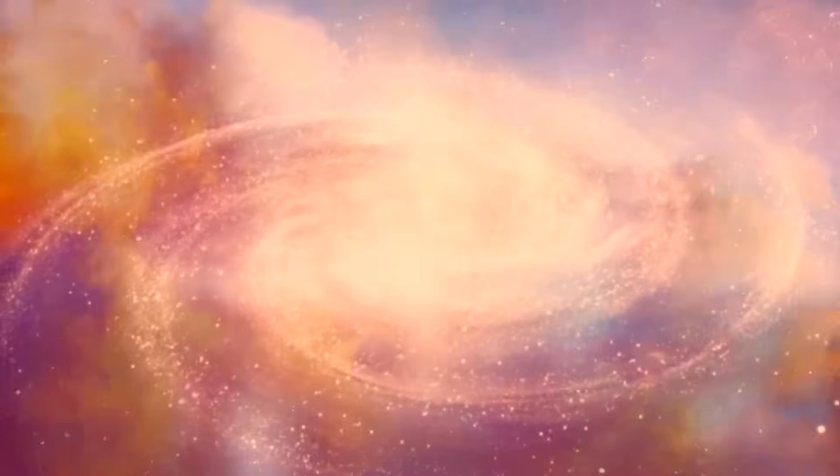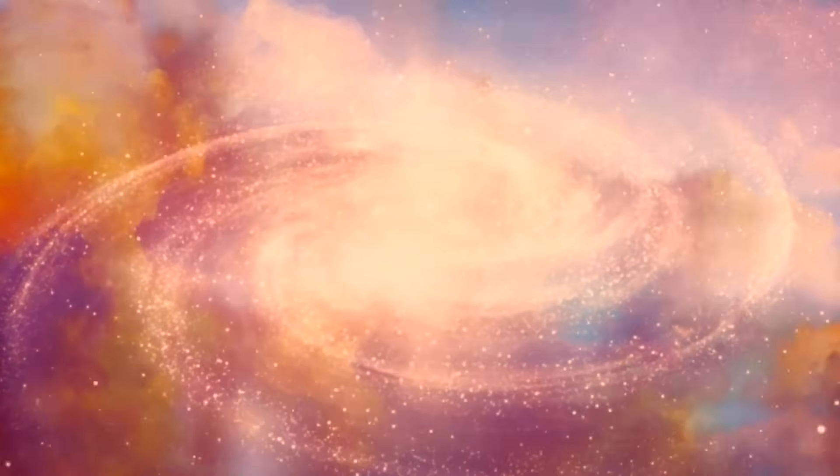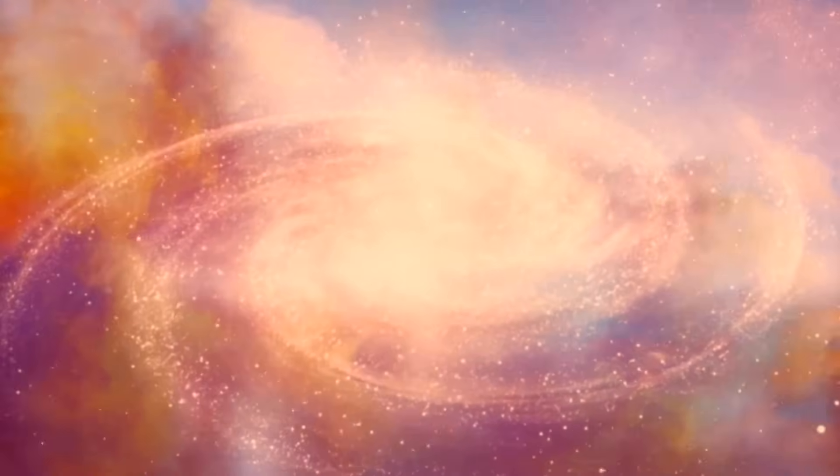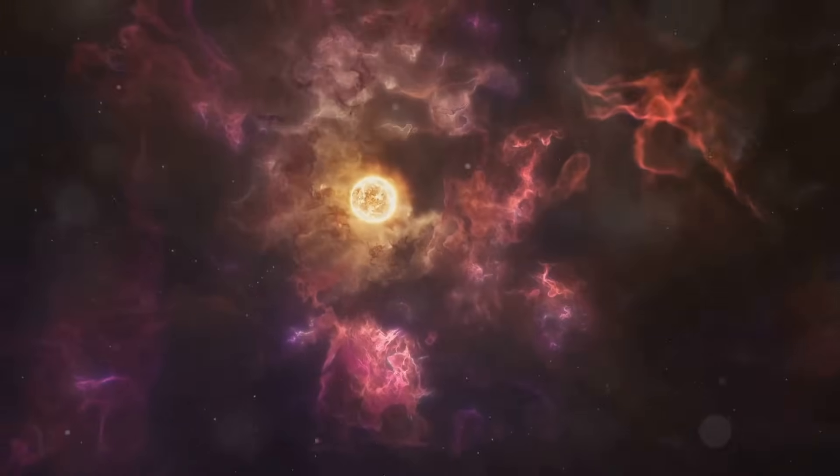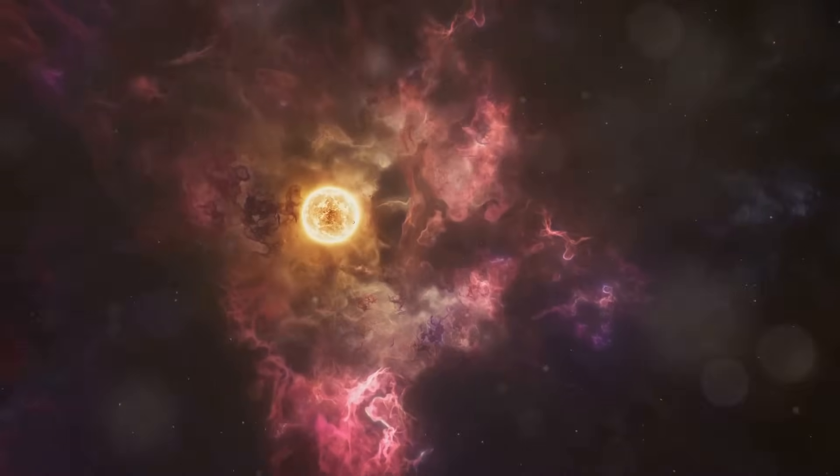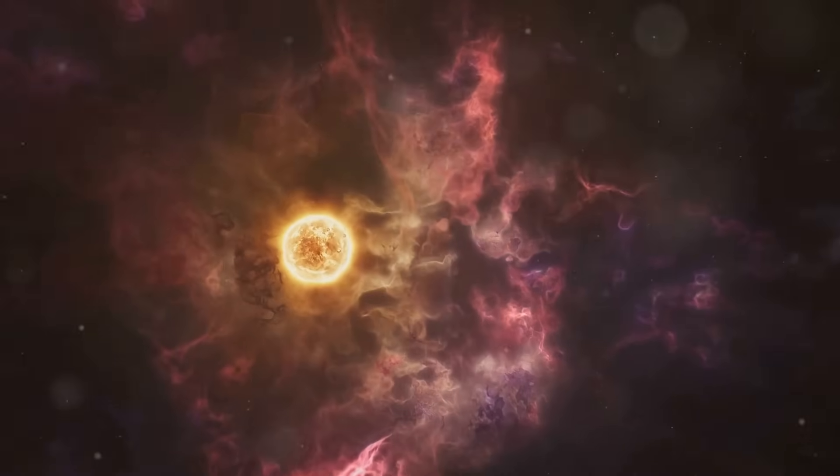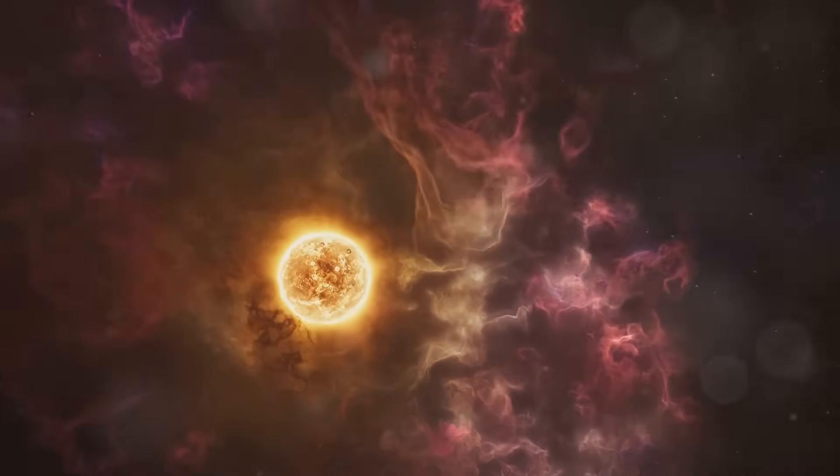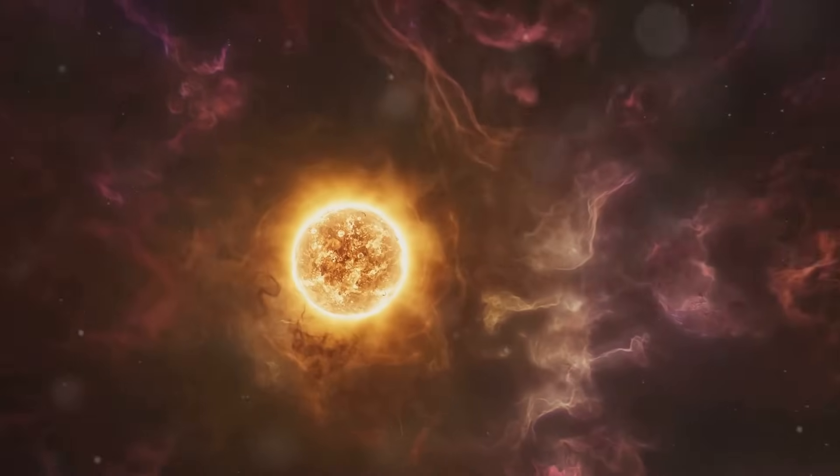Billions of years ago, our solar system was a swirling cloud of dust and gas. This vast, chaotic cloud, known as the Solar Nebula, was composed of hydrogen, helium, and other trace elements. It stretched across the cosmos, a seemingly unremarkable part of the galaxy, yet it held the potential to create an entire solar system.